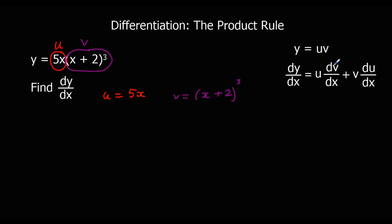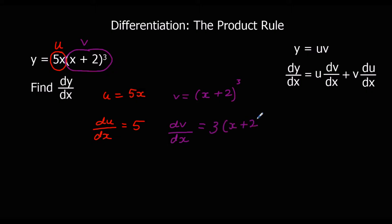So we've got u as 5x, so du/dx is 5. And dv/dx — we're going to differentiate v using the chain rule. We differentiate around the bracket: multiply by the power and take one off the power, then multiply by the bracket differentiated, which is just 1 in this case, so we leave that as it is.